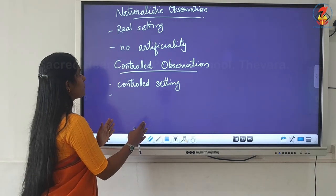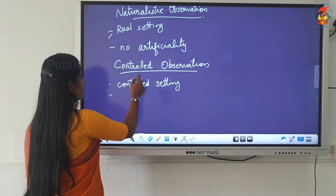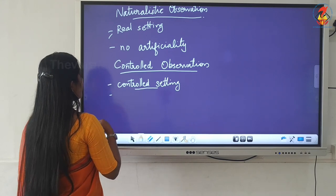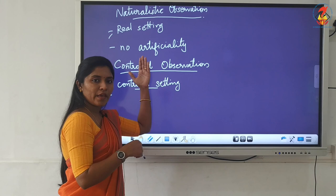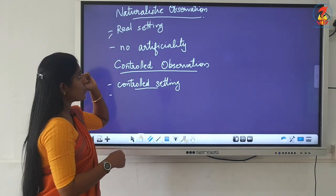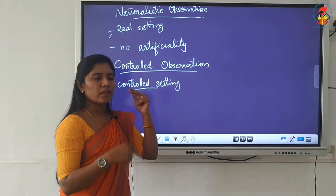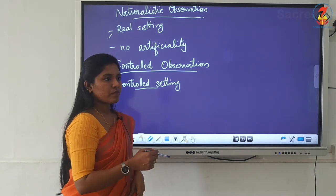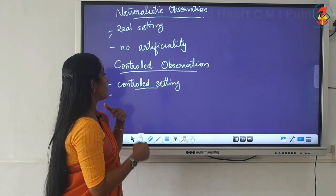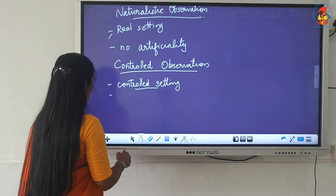To compare: naturalistic observation happens in a real setting with no artificiality and no modification of behavior, and the participant does not know they are being observed. In controlled observation, the observation happens in a controlled setting and the participant is aware and conscious of being observed.